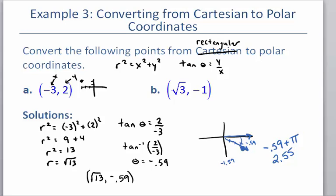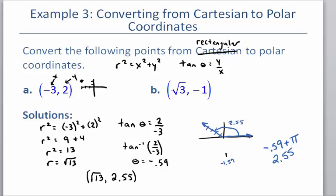So we go back and change the angle to 2.55. The square root of 13 is 3.6, so the point lies between 3 and 4 units out. With the corrected angle of 2.55, the point now lands in quadrant 2, which is basically the same location as the original rectangular coordinate.